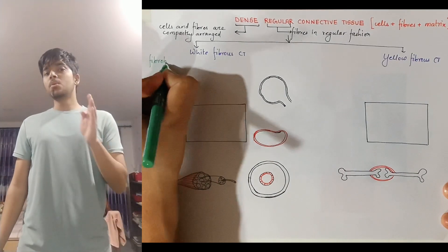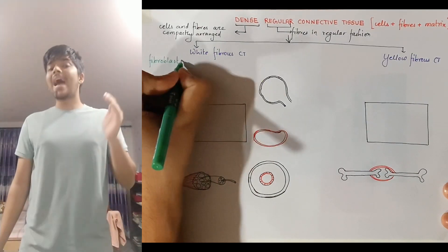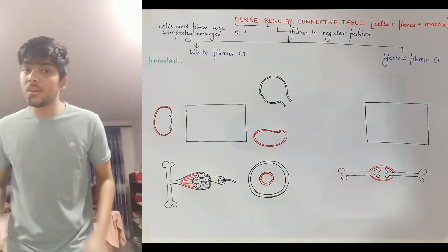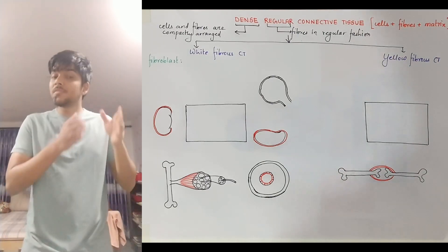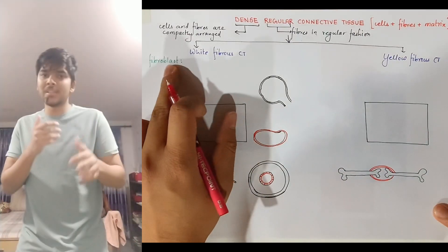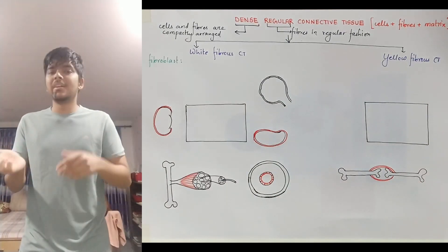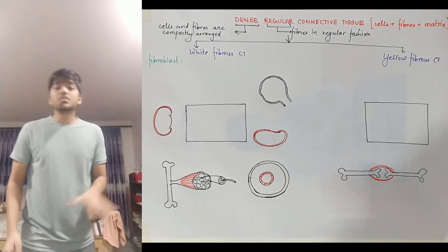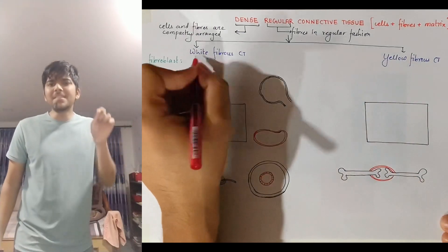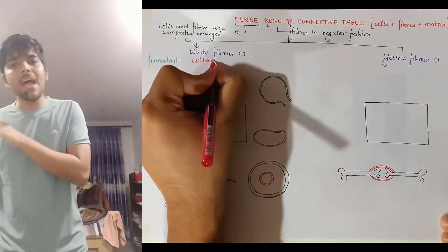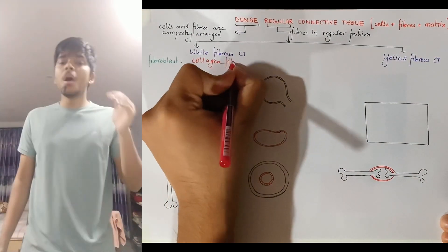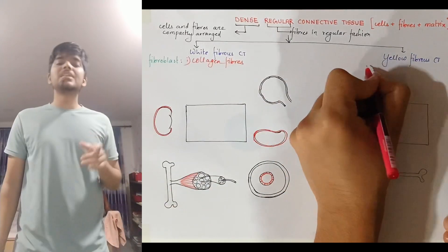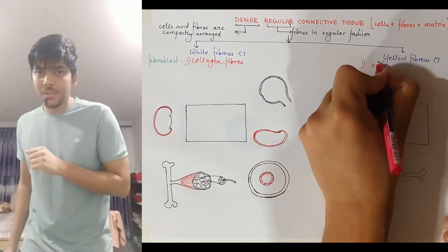In connective tissue, the fiber-secreting cells are fibroblasts. 'Fibro' means fiber and 'blast' means precursor cell, so fiber-secreting cells are fibroblasts. If these fibroblasts secrete collagen fibers in a dense regular connective tissue, then that is your white fibrous connective tissue.